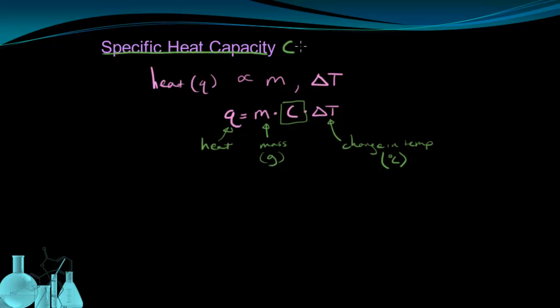So specific heat capacity, represented by this capital C, is a constant that's different for each substance that represents the amount of heat needed to raise one gram of that substance by one degree Celsius.